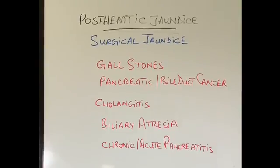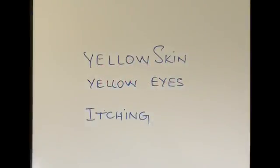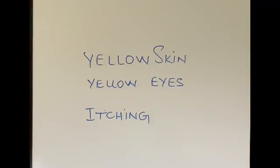When the eyes and skin become yellow due to jaundice, one of the main symptoms patients complain of is itching. Patients with obstructive or post-hepatic jaundice — especially those whose bile ducts are blocked by gallstones or pancreatic cancer — can become very deeply yellow, almost orange in color, and become very itchy on the skin.